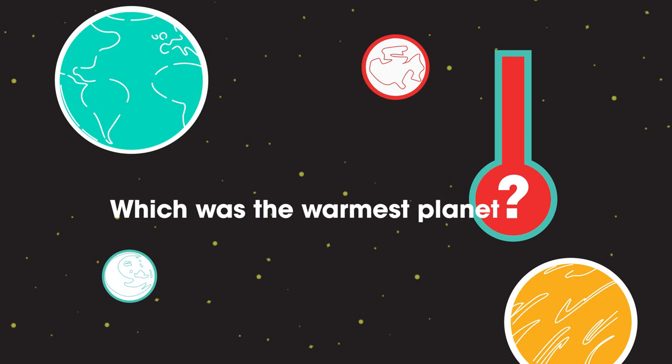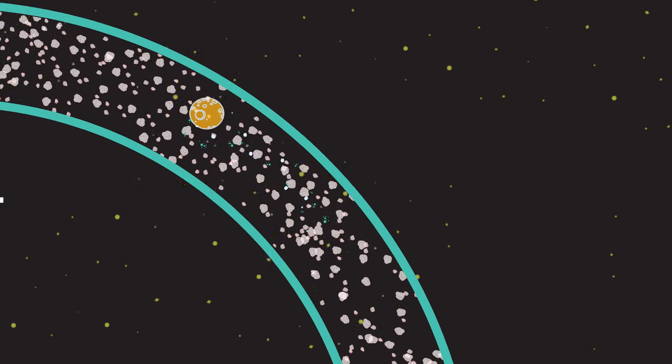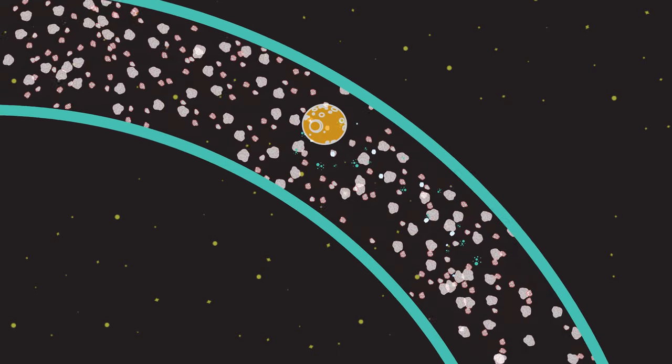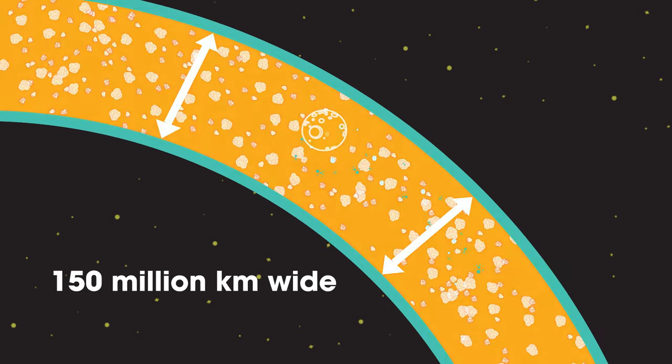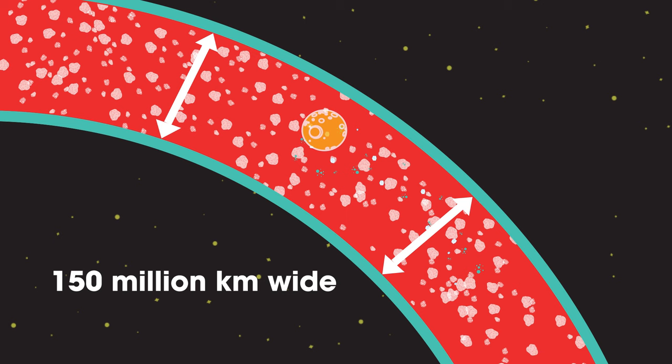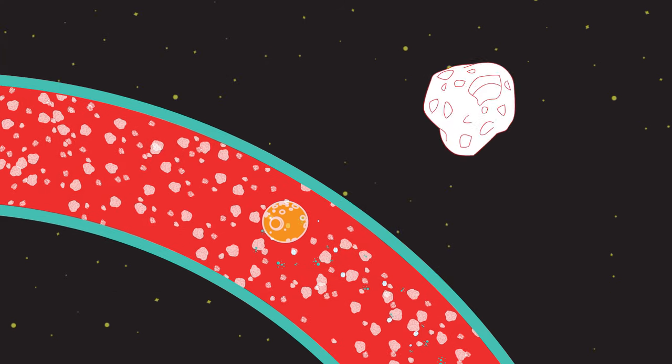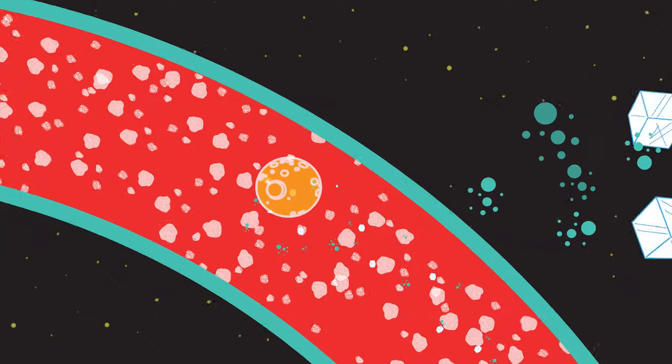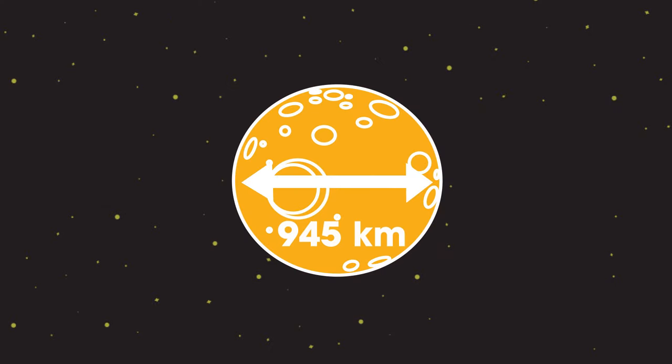More on that at the end of this video. Beyond the orbit of Mars there is the asteroid belt. This is about 150 million kilometers wide and consists of irregular bodies that orbit the Sun which are made from rock and ice varying in size from dust grains up to one so large, 945 kilometers across. It has a name, Ceres.